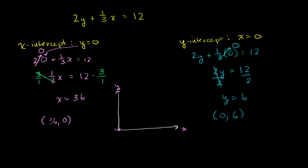The point (36, 0) might be all the way over here. So that's the point (36, 0). And if that's 36, then the point (0, 6) is going to be right about here. So that's the point (0, 6).